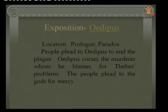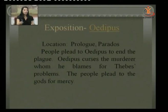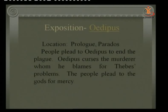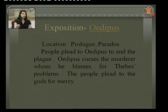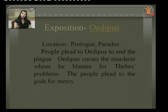The exposition starts. People plead to Oedipus to end the plague, knowing he was the one who answered the riddle of the Sphinx and saved Thebes before. Oedipus curses the murderer he blames for Thebes' problem, not knowing who killed the king. The people plead to the gods for mercy, and the only way to cure the city is to cast out the murderer.